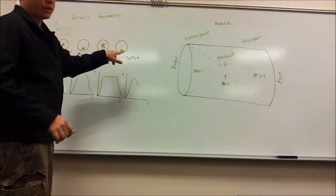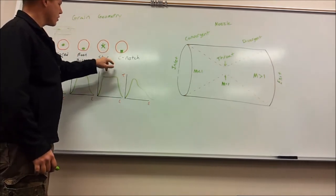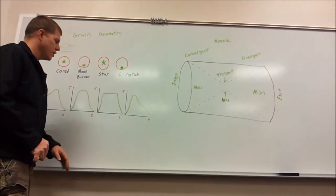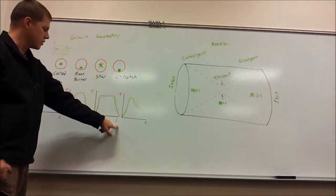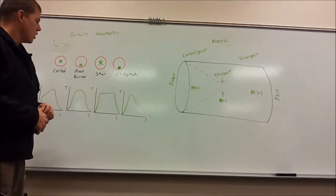Here we have two different grain types. We have the star grain and the C-notch grain. You see the different thrust over the time graphs.